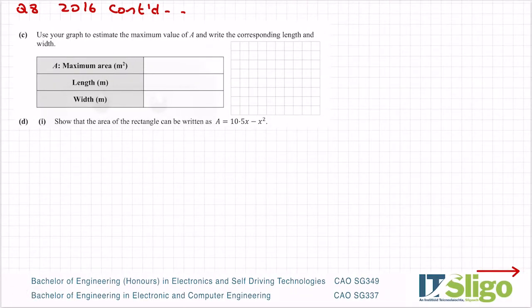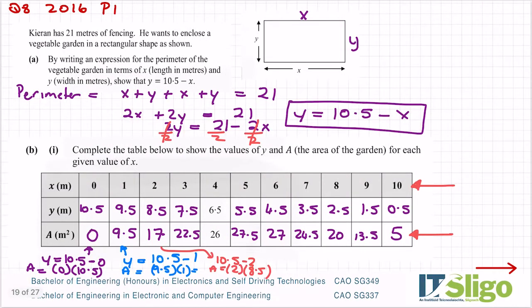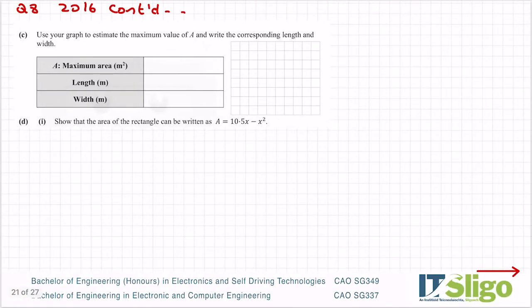Use your graph to estimate the maximum value of a and write the corresponding length and width in this table. Okay, so the maximum area. So use your graph. So the maximum area would occur at the top of the graph. Okay, now what's really important in the functions chapter when you're doing graphs and reading them is that you show how you're reading off the values. So using your ruler, dot across here to the y-axis and show what maximum value of area you're getting. So we're getting what, for that, about 27.5. Okay, so I would say the maximum area is 27.5.